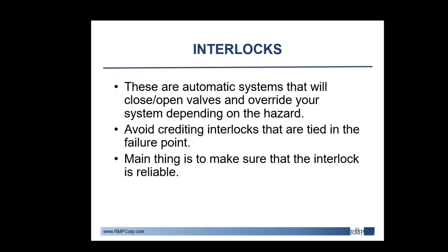Interlocks are automatic systems that will close or open valves and override your system depending on the hazard. You want to avoid creating interlocks that are tied into the failure point. If your flow control valve failed closed, you don't want to rely on the transmitter tied into that valve to swing that valve open, as the cause of failure may be due to that transmitter misreading. The main thing is to make sure that the interlock is reliable — you do not want to end up in a scenario where your operators believe something will trip and then it does not, as this can end with an injury or possibly worse to your personnel.